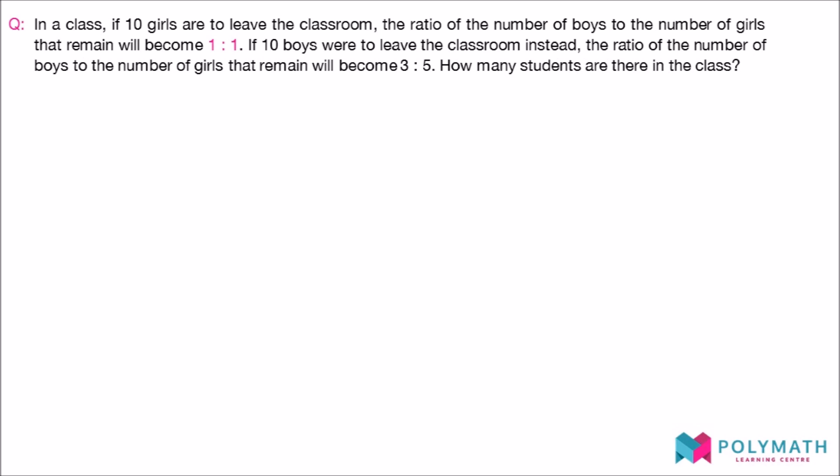If 10 girls are to leave the classroom, the ratio of the number of boys to the number of girls that remain will become 1 to 1. If 10 boys were to leave the classroom instead, the ratio of the number of boys to the number of girls that remain will become 3 to 5. How many students are there in the class?